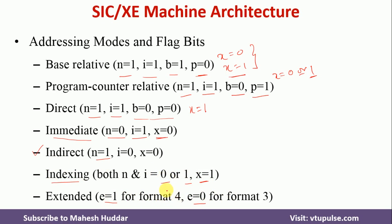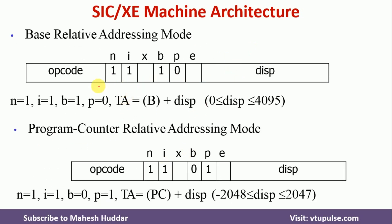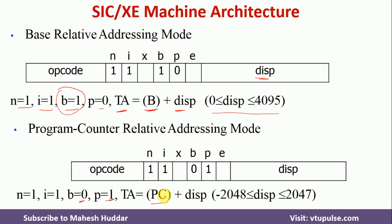We will take some simple examples to understand these addressing modes. In the first case, N=1, I=1, B=1, P=0 — the target address is calculated as the value of the base register plus displacement. The displacement must be in the range of 0 to 4095. In the second case, P=1 and B=0 — the target address is the program counter plus displacement, where displacement must be in the range of minus 2048 to 2047. If it exceeds that range, we shift to base relative addressing mode.